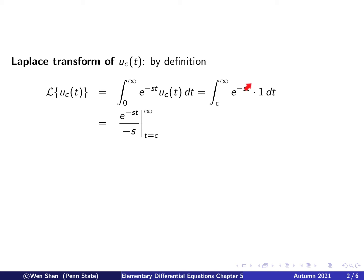Let's work this out. The integral of this function is e to the negative st over negative s, taking the limit t from c to infinity. Plug in the limit: at infinity, if s is bigger than 0, we get 0. At t equal to c, we get e to the negative sc over negative s. We can drop the 0 and cancel the two negative terms, giving us e to the negative sc over s.